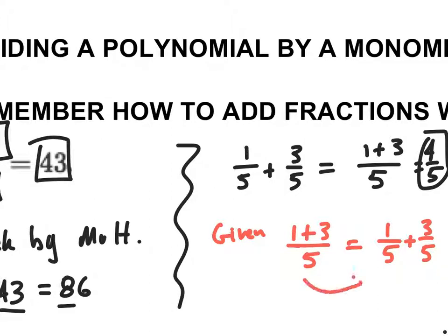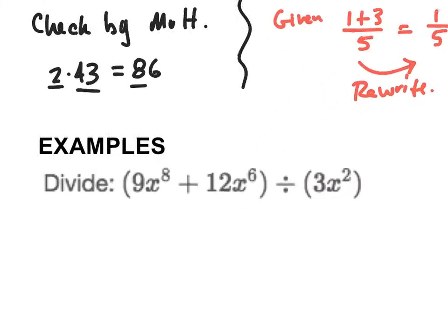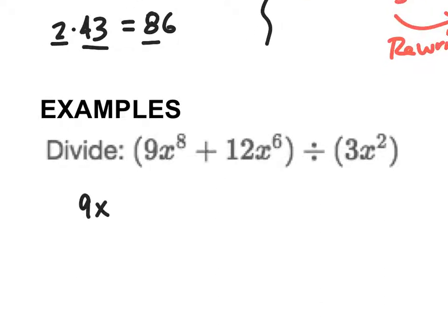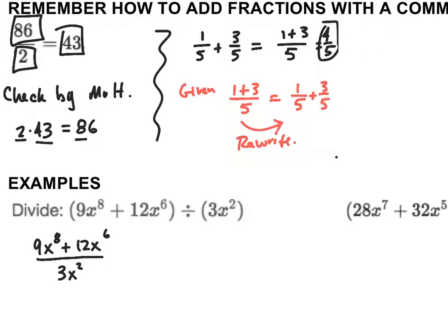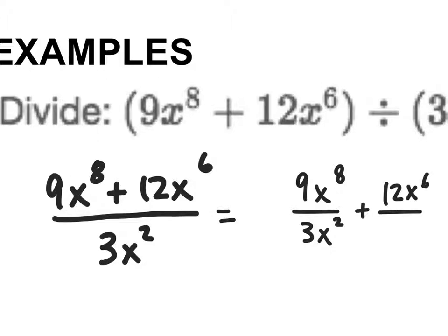I'm going to use that same idea to simplify and divide these out. On this first example, let me rewrite it as 9x to the eighth plus 12x to the sixth, divided by 3x squared. What you have here is a fraction with polynomials. This is the same idea: two things are being added and then divided by a common number. So I want to rewrite this as 9x to the eighth divided by 3x squared, plus 12x to the sixth divided by 3x squared.